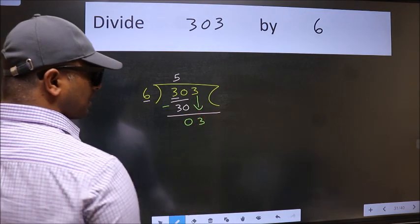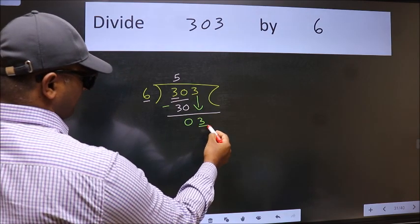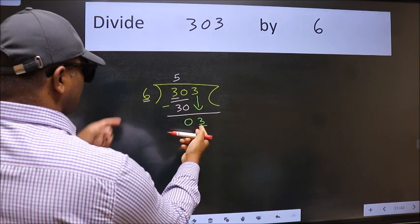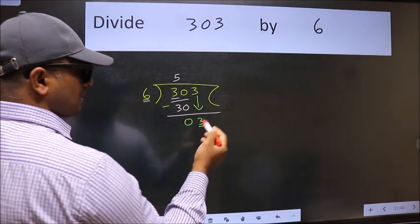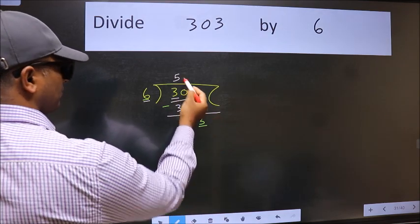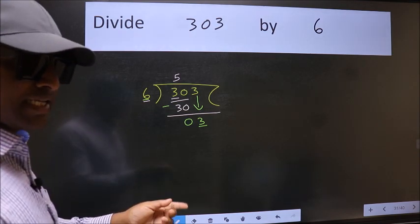After this step, the mistake happens. And the mistake is this: here we have 3 and here 6. 3 is smaller than 6. So what many do is they directly put a dot and take 0, which is wrong. Why is it wrong?